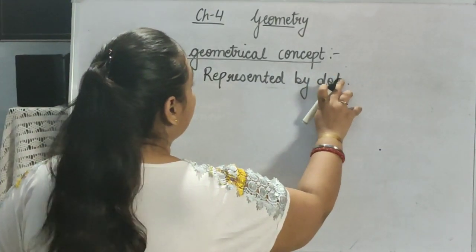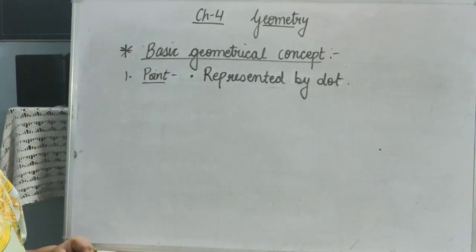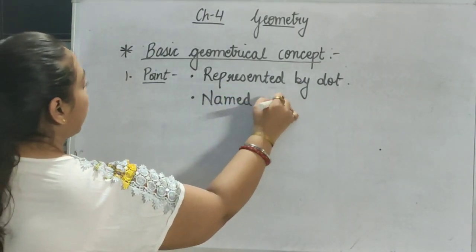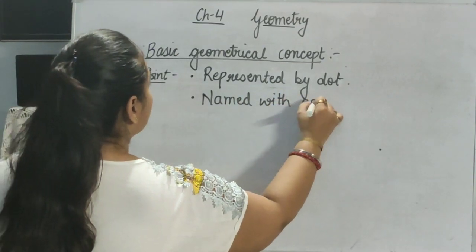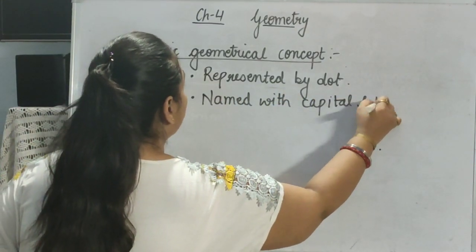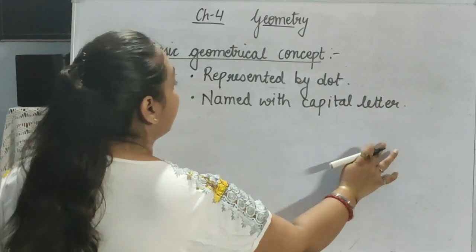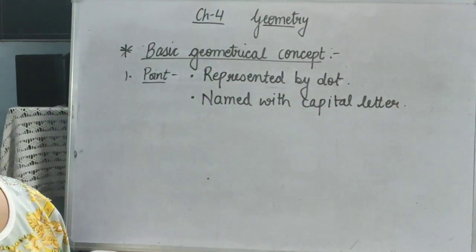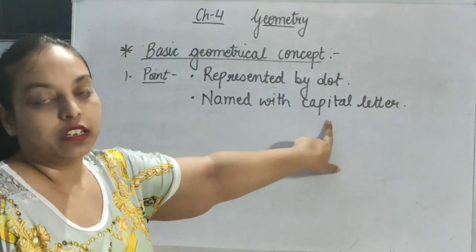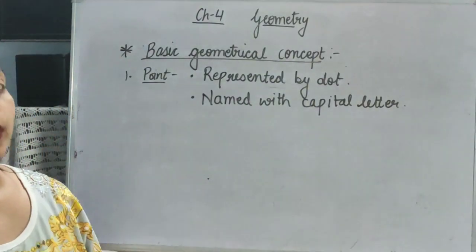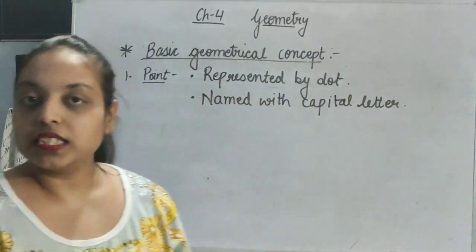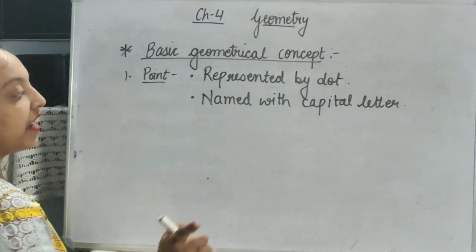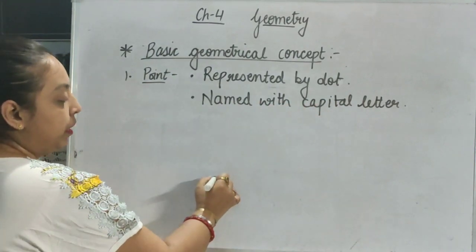It means a point can be represented by dot. The second is, it will be named with capital letter. This is trying to say, if I have a point here, so I can name it with only capital letter. In English, we have 26 letters, so we can use any of the letters out of A to Z, but it should be capital. So I am using A here.